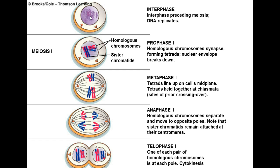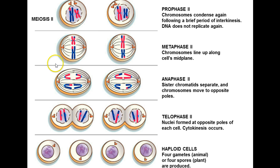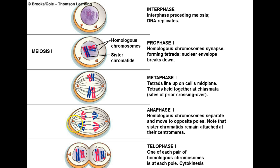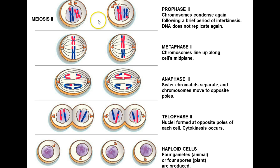Then we're going to go through meiosis 1 and meiosis 2. Meiosis 1 is going to separate the homologs, reduce the chromosome number by one half, and change us over from diploid to haploid. Meiosis 2 is going to separate the sister chromatids, so there's no change in ploidy level — it's haploid all the way through — but it does separate the two chromatids from each other.